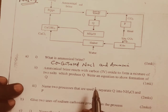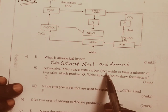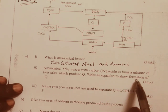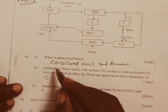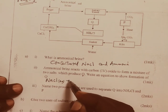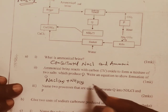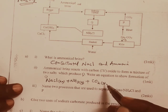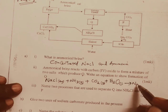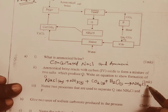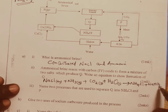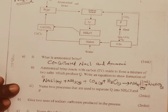Next, ammoniacal brine reacts with carbon dioxide to form a mixture of two salts which produce Q. Write an equation to show the formation of Q. Concentrated sodium chloride plus ammonia gas reacts with carbon dioxide plus water (liquid) to produce ammonium chloride (aqueous) plus sodium hydrogen carbonate (solid). Sodium hydrogen carbonate is a solid; ammonium chloride is in solution form.